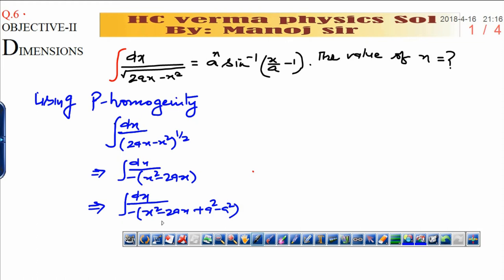When you put like this, you will get simplification of this result. That is a square minus a square plus x square minus 2ax.